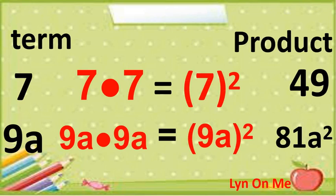Observe the factors of 49 and 81A squared. The factors of 49 are 7 and 7. The factors of 81A squared are 9A and 9A. Do they have equal factors? If your answer is yes, then that makes 49 and 81A squared a perfect square.